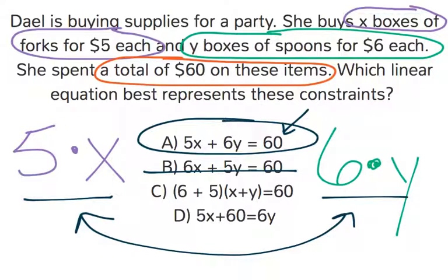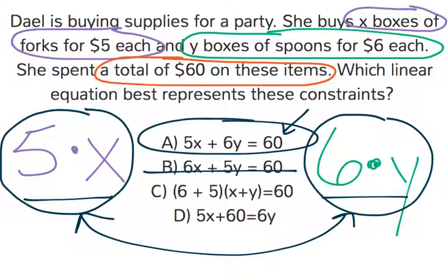C, 6 plus 5 times X plus Y equals 60. Everything got mixed up there. Remember, we need to have these exact coefficients and variables together. That's not going to work.